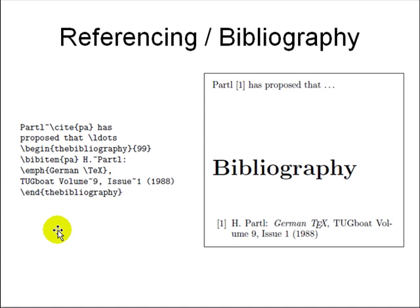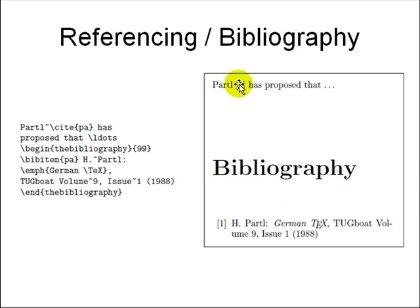Bibliography is usually very hard to generate manually because of numbering schemes and different journal styles — if you send to one journal and then another, you have to change it again. LaTeX uses symbolic references: you say backslash cite{pa}, and then later a bibitem entry for pa — for example, bibitem{pa} is H. Portal, tilde (unbreakable space), emphasize{German TeX}. The tilde means there should be no line break at that point — it's an unbreakable space. When you use begin bibliography, the bibliography text is generated automatically with correct numbering.